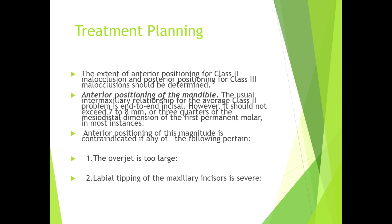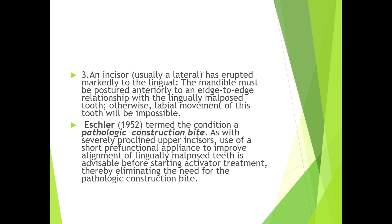The extent of anterior positioning for Class 2 malocclusion and posterior positioning for Class 3 malocclusions should be determined. For the average Class 2 problem, the usual intermaxillary relationship is end-to-end incisal; however, it should not exceed 7–8 mm, or three-quarters of the mesiodistal dimension of the first permanent molar. Anterior positioning of this magnitude is contraindicated if: (1) the overjet is too large; (2) labial tipping of the maxillary incisors is severe; (3) a lateral incisor has erupted markedly to the lingual — the mandible must be postured to an edge-to-edge relationship with the lingually malposed tooth, otherwise labial movement will be impossible. Echler (1952) termed this a pathologic construction bite. As with severely proclined upper incisors, use of a short pre-functional appliance to improve alignment is advisable before starting activator treatment, thereby eliminating the need for the pathologic construction bite.